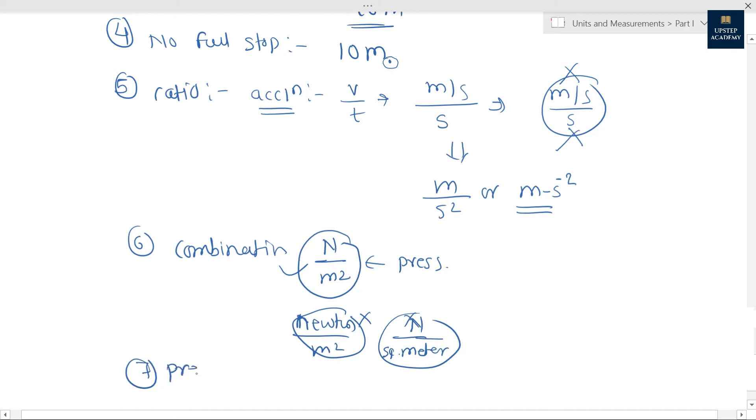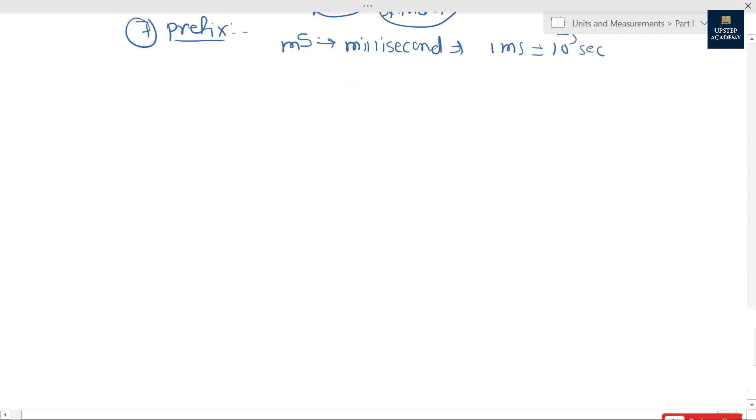Seventh one is prefix. What does it mean by prefix? We have to put one letter before unit. It means what? Let's take example of second. Before second, if I put m, then it means millisecond, and one millisecond is equal to 10 raised to minus three second.